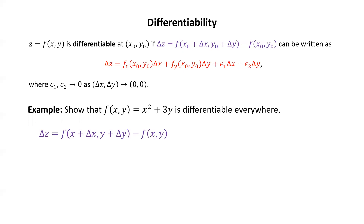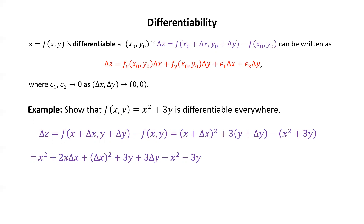First let's compute delta z. Remember delta z is f(x + delta x, y + delta y) minus f(x, y). In this case, that's (x + delta x)² + 3(y + delta y) minus (x² + 3y). Multiplying everything out gives x² + 2x delta x + delta x² + 3y + 3 delta y minus x² minus 3y. The x squares cancel, the 3y's cancel, and we're left with 2x delta x + 3 delta y + delta x times delta x + 0 times delta y. I rearranged the terms so that they match the expression for delta z — a function times delta x, plus a function times delta y, plus an expression times delta x, plus an expression times delta y.